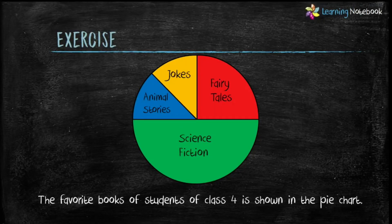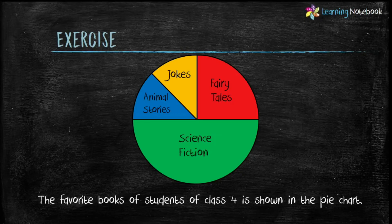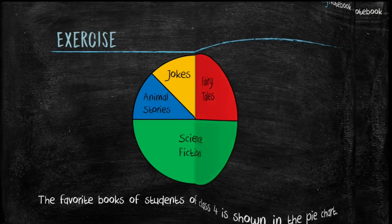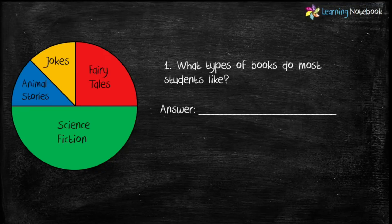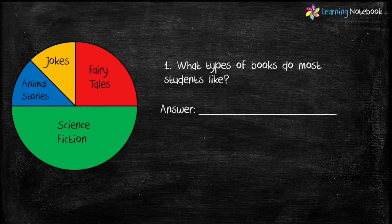Now let's do an exercise to make sure you understand how to solve questions based on pie charts. This pie chart shows the favorite books of students of class 4. Question one: what type of books do most students like? Looking at this pie chart, science fiction is representing half of the circle, so most students like science fiction.